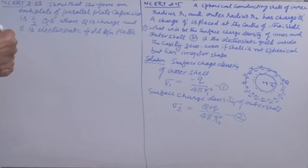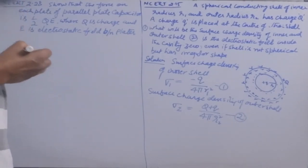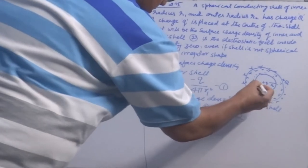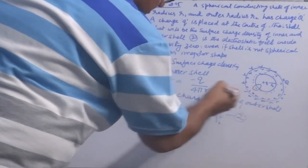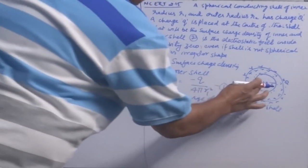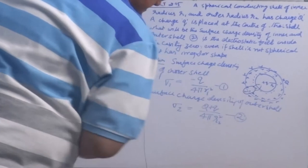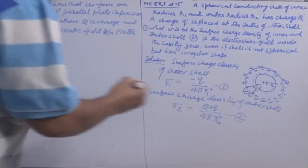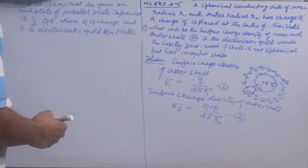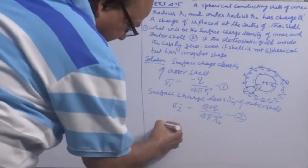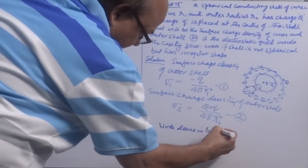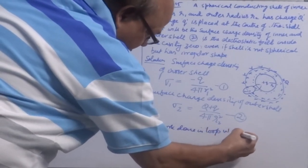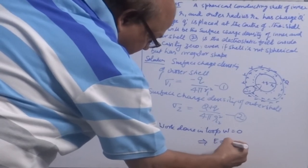The second part asks: if the shell is in irregular shape, will the electric field within the cavity be zero? The answer is yes. Choose any closed loop inside and outside the cavity, parallel to the direction of electric field. Calculate work done in the loop — you will find it is zero. This shows the electric field is zero.